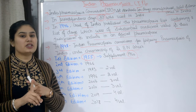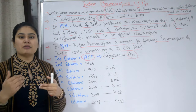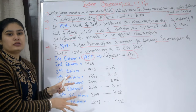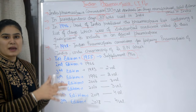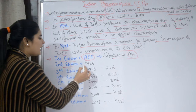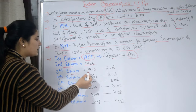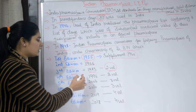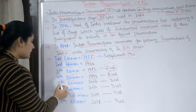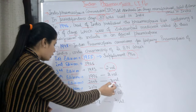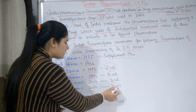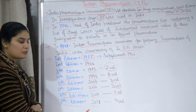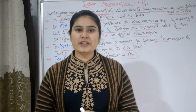The editions of Indian Pharmacopoeia are revised from time to time as new drugs come to market. The second edition came in 1966, the third edition in 1985 with two volumes, the fifth edition in 2007 with three volumes, the sixth edition in 2010 with three volumes, the seventh edition in 2014 with four volumes, and the eighth edition in 2018 with four volumes.